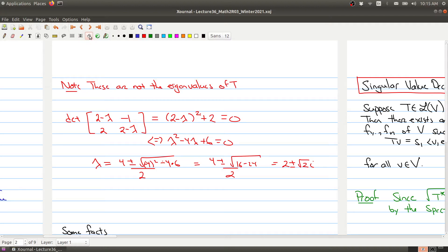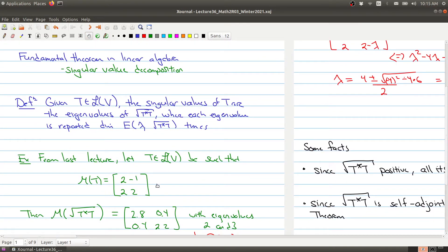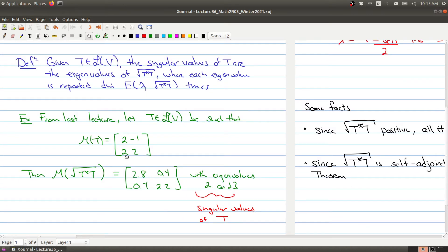So the singular values are not the eigenvalues of this matrix. They're the eigenvalues of the matrix that you get by looking for the square root. And we saw in the previous lectures about how to find that. And so the eigenvalues are 2 and 3.